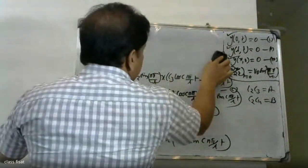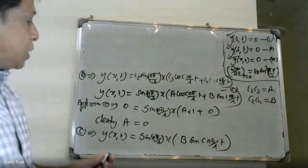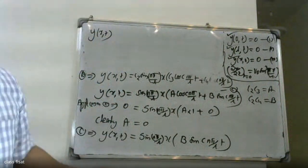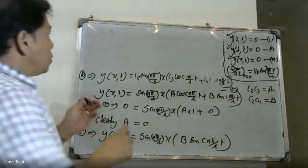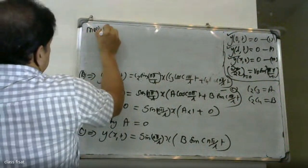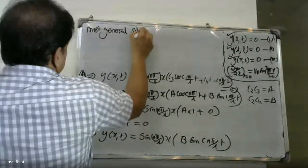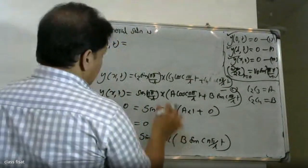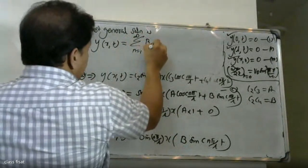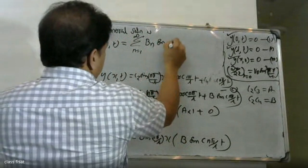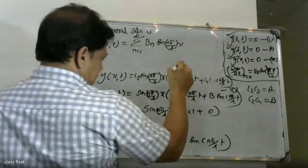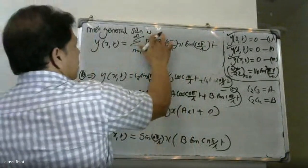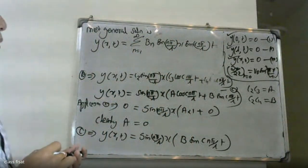Applying the boundary condition, the most general solution is written as: y(x,t) = Σ (n=1 to ∞) bₙ·sin(nπx/L)·sin(cnπt/L).